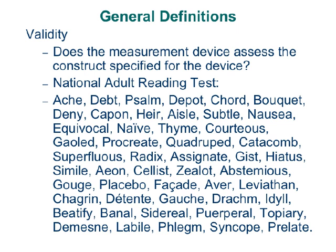An example of validity: this is a real test used in neuropsychology to estimate someone's IQ level before a head or neurological injury — it's called the National Adult Reading Test. Various versions have been developed for the United Kingdom and the U.S. Look over the items carefully and try to figure out what construct is being measured. It's called a reading test, but there's something much more subtle about this kind of reading. The words in this test are not words that can be sounded out phonetically.